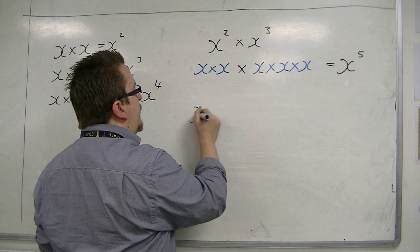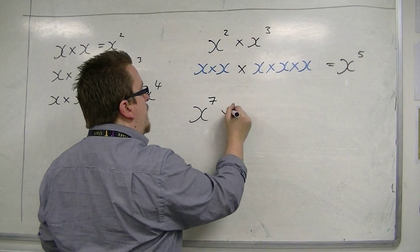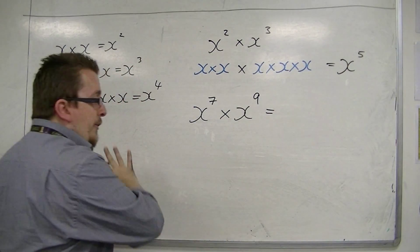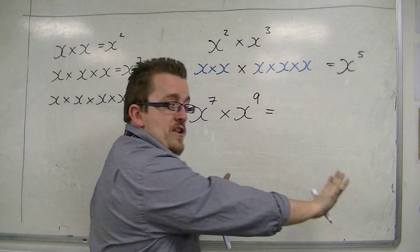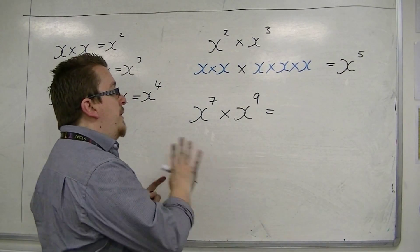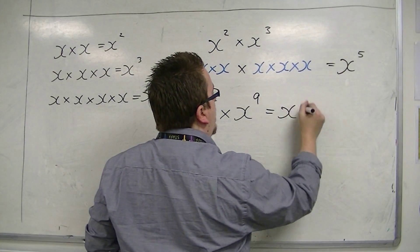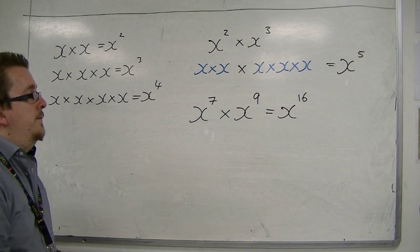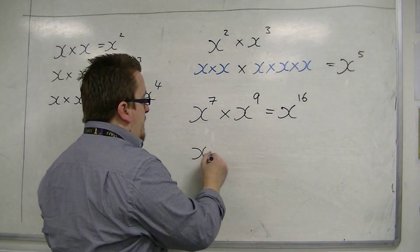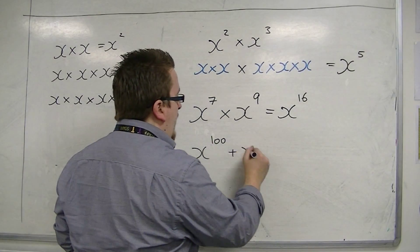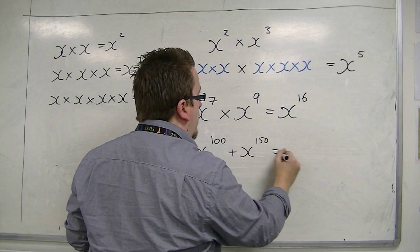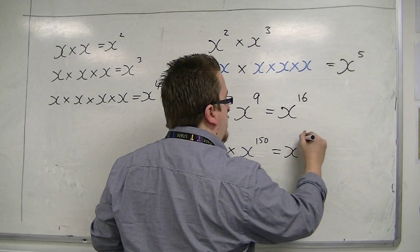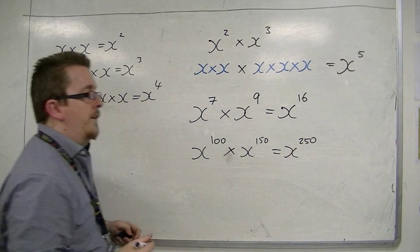So if you've got something like x to the 7 times x to the 9, I'm not going to write out 7 x's and then 9 x's, because in total I would have 16 x's, so it would be x to the 16. You could do something like x to the 100 times x to the 150, and then you would have x to the 250.